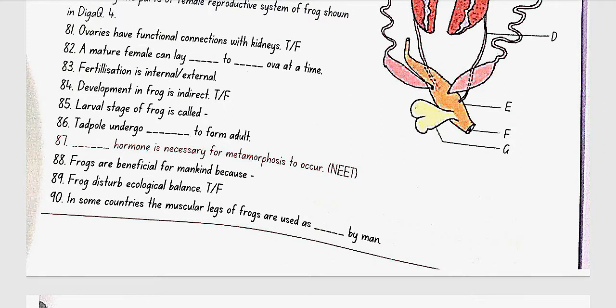Thyroxine hormone is necessary for metamorphosis to occur. Frogs are beneficial for mankind because they eat insects and protect the crop. Frog disturb the ecological balance. No, false. In some countries, the muscular legs of frogs are used as food by man. Thank you.